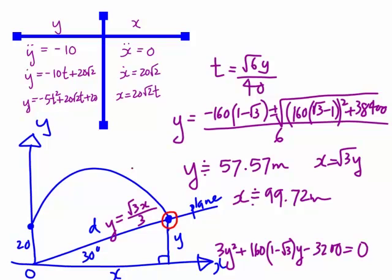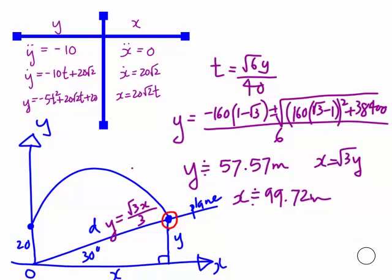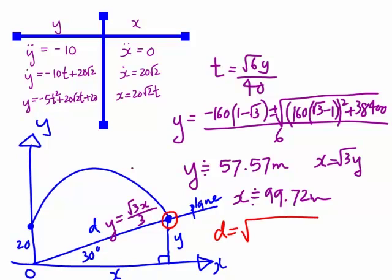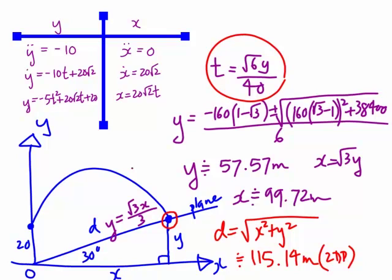Now we have the x and y values at the landing point. The distance is the square root of x² + y²: d = √(57.57² + 99.72²) ≈ 115.14 meters. For the time, we use t = √6·y/40. Substituting y ≈ 57.57, the time turns out to be approximately 3.53 seconds.